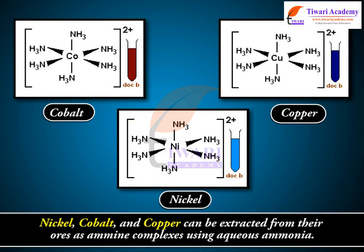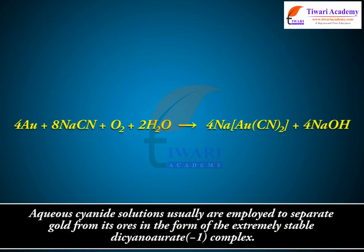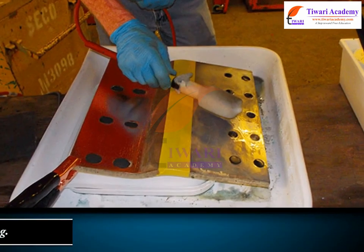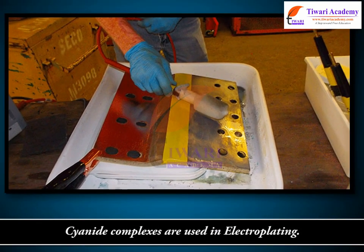Nickel, cobalt, and copper can be extracted from their ores as amine complexes using aqueous ammonia. Aqueous cyanide solutions are usually employed to separate gold from its ores in the form of the extremely stable dicyanoaurate(I) complex. Cyanide complexes are also used in electroplating.